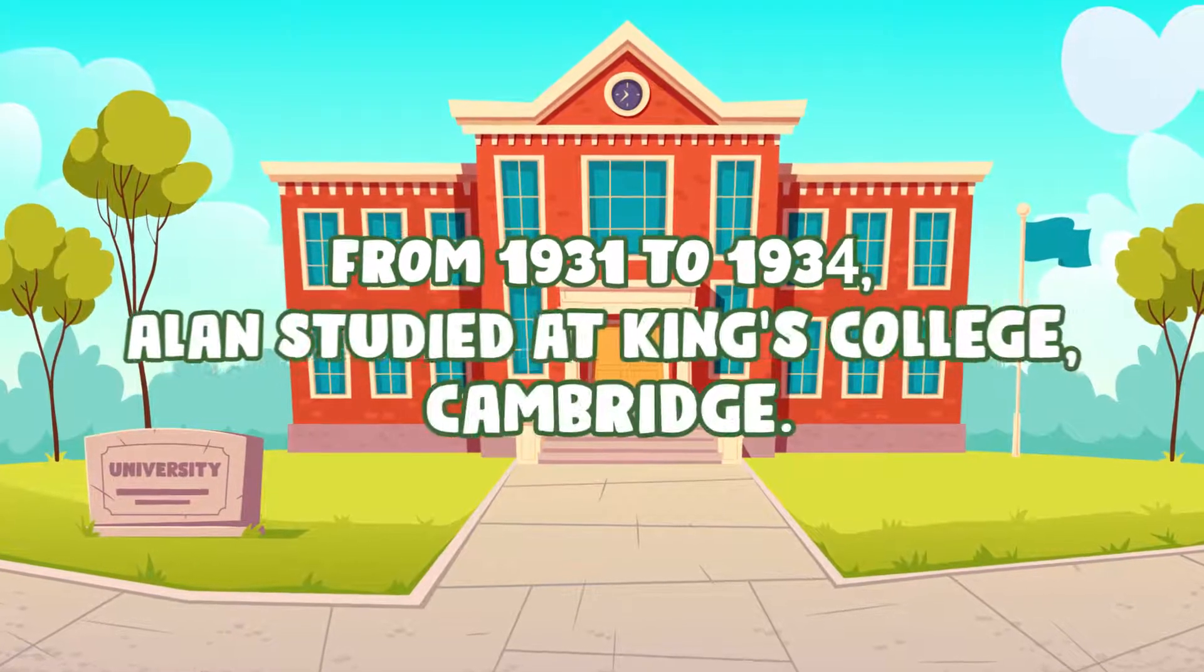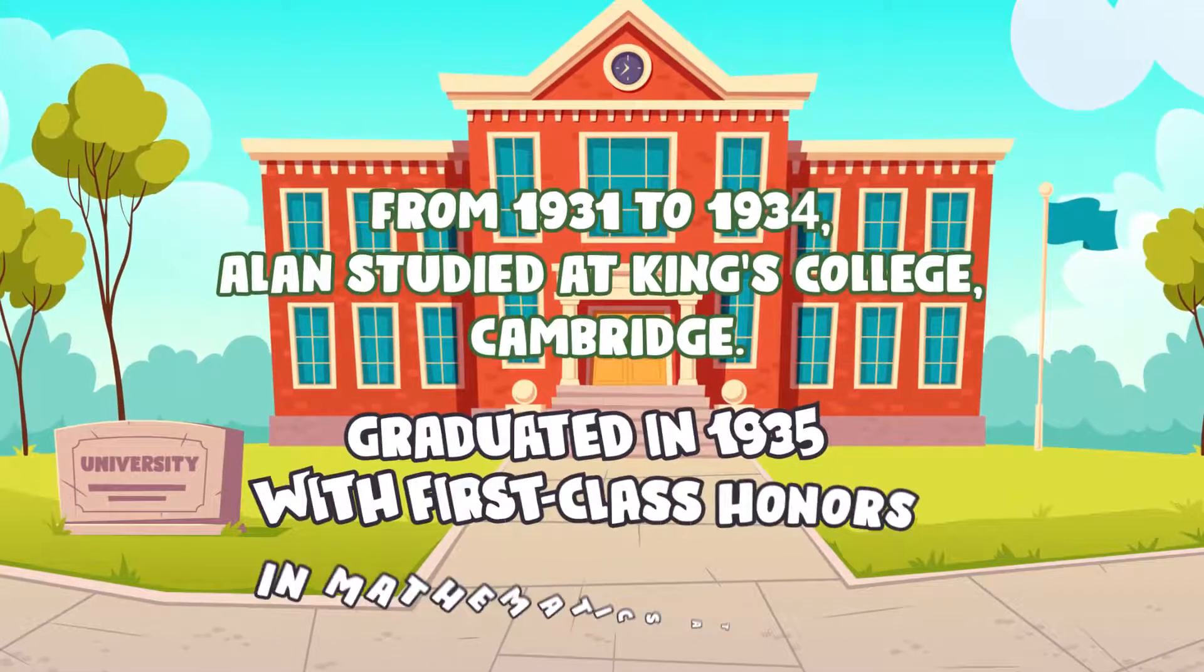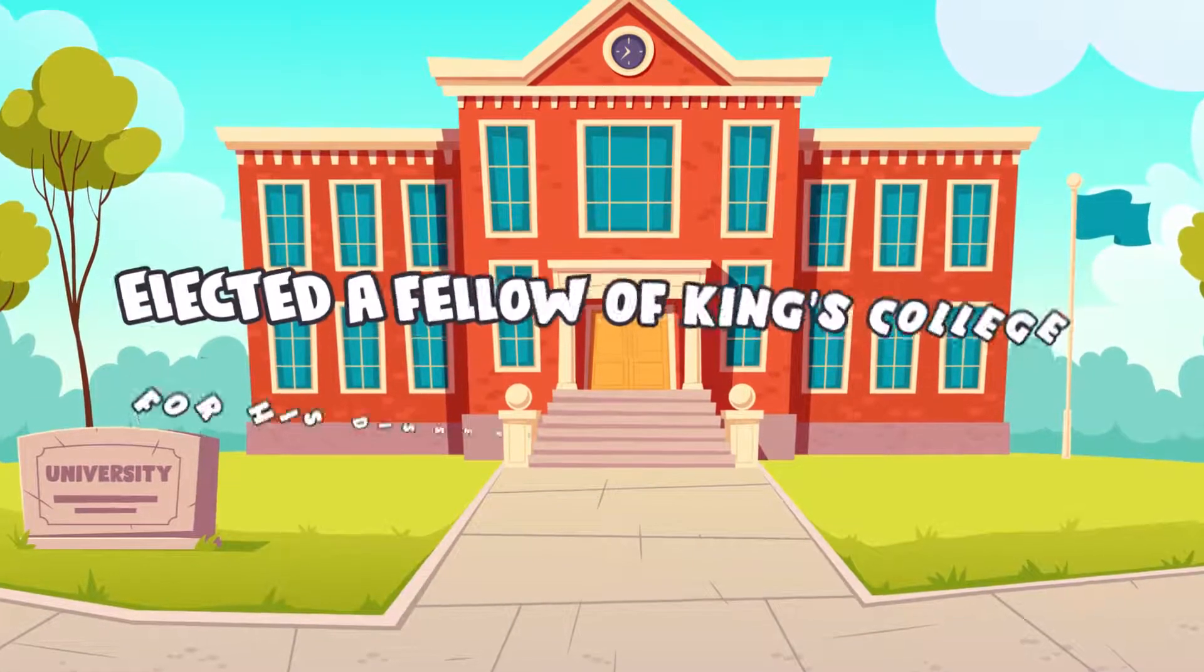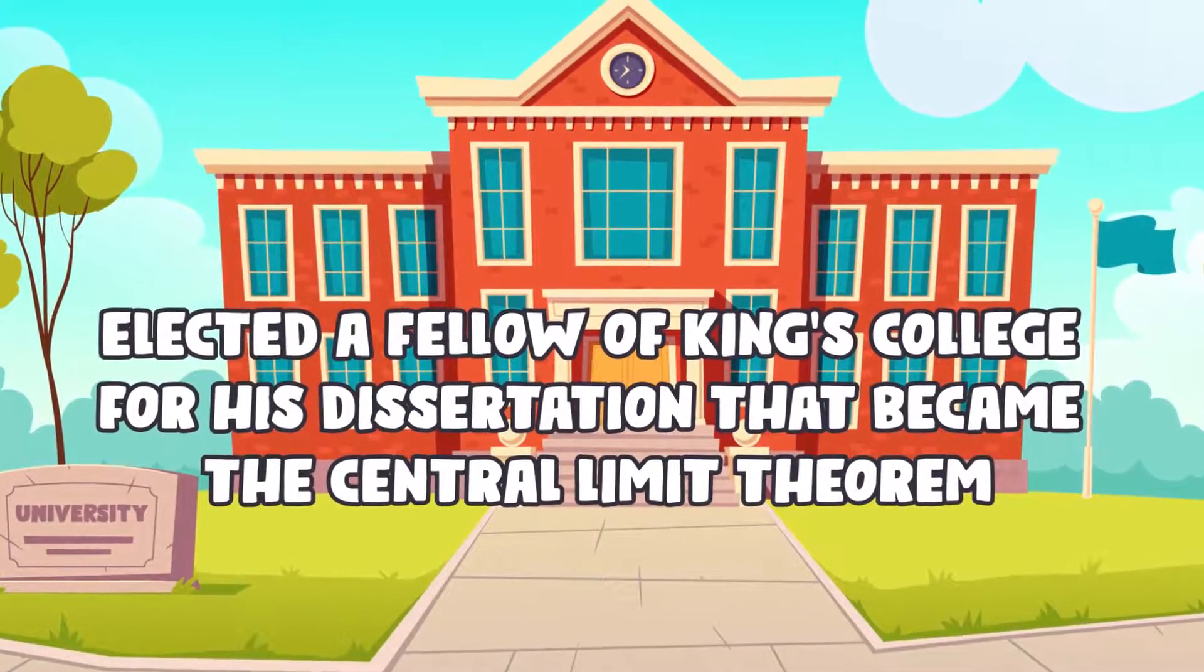In 1931-1934, Alan studied at King's College, Cambridge and graduated in 1935 with first-class honors in mathematics at the age of 22 and was elected fellow of King's College for his dissertation that became the central limit theorem.